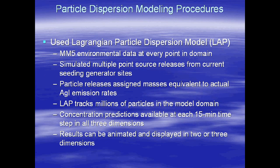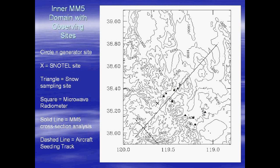This is one of our aircraft seeding flight tracks down here. The X's are snow tail sites within the basin. The triangles are snow sampling sites where we actually took snow samples and ran them through our trace chemistry lab at DRI to see if the AgI seeding material was getting impacted into the snow pack over the basin. We had a microwave radiometer at the triangle site, slightly downwind of the Sierra Nevada crest, and we developed cross sections from the MM5 along this line, which is basically parallel to the upper-level wind flow.